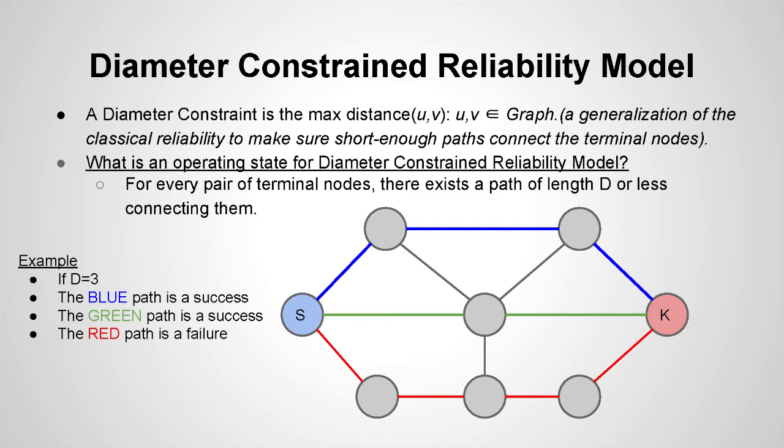Now an example for this. If we take this example here, this simple graph, the blue s would be our source node, the red k would be our destination, our terminal node, so we are trying to communicate between them. So right there it says if d equal to 3, we are setting the diameter constraint equal to 3 for this. So for it to be considered an operating path or an operating state, there has to be a path with 3 or less connecting those two nodes. So if you see the blue top path, you can just count just 1, 2, 3, that would be a success. The green going through the middle is 2, which would obviously be less than 3, that would also be considered a success. But the red path on the bottom would be considered a failure.